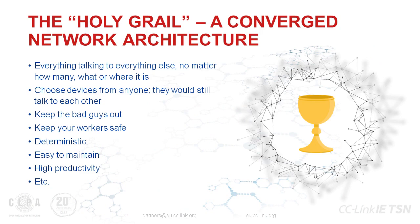Where we are today is we're looking for what you could call the Holy Grail — a converged network architecture. What that means is we want a situation where everything is talking to everything else, no matter what it is, how many we have, or where it is. Just one great big network where everything communicates with everything else and everything works fine. A key point is that we want to be able to choose devices from any vendor and still have them talk to each other. But there are other key points too — cybersecurity has become a very key concern, so we need to keep the bad guys out while also keeping workers safe and ensuring all processes run in a safe manner.